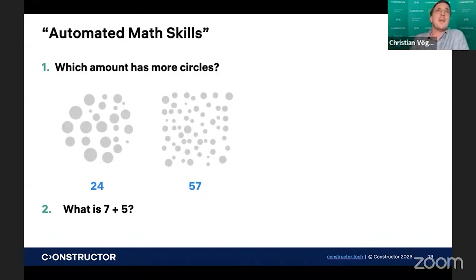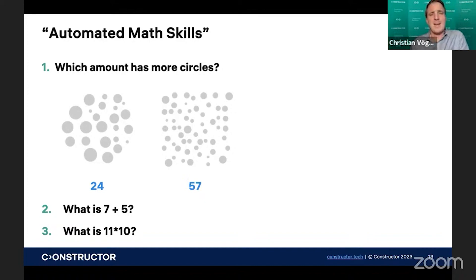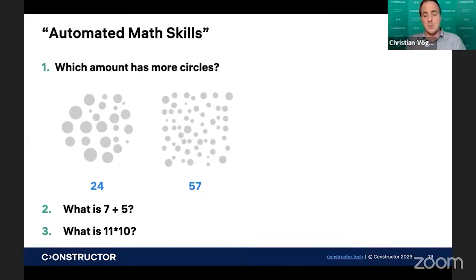If I ask you what's 11 times 10, I assume that most of you, as soon as I say 11, see a 1, 1. So I provide a number of words — I say 11 — and you immediately convert it to an Arabic representation as 1, 1. And when I say times 10, I assume most of you visually add the 0 to the 11 you just imagined, and that's how you get to 110. So I present the task verbally, you immediately convert it to an Arabic visual representation, and then you solve the task visually by adding the 0.